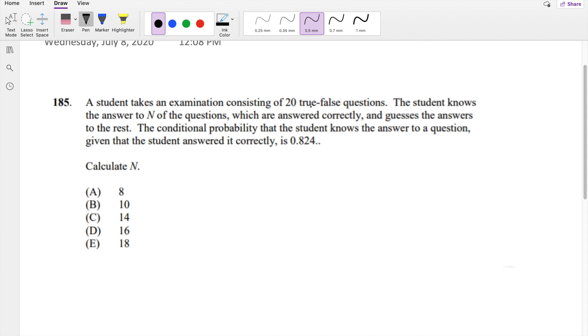A student takes an examination containing 20 true or false questions. The student knows the answer to any of the questions which are answered correctly. But basically they're saying if they know the question, given that they know the question, they answer it correctly. So the probability that they answer correctly given that they know it is 100%, which is just equal to 1.